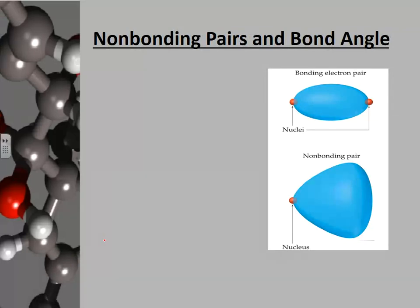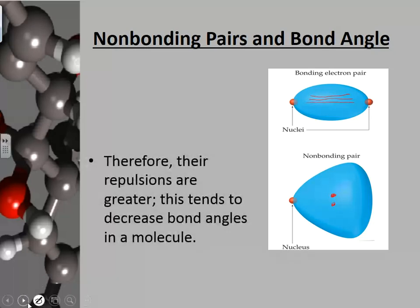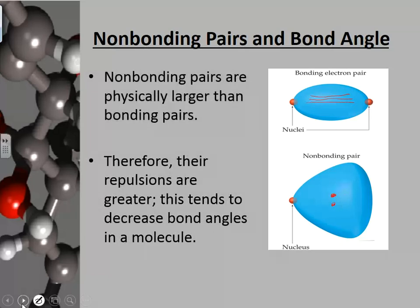Let's talk about non-bonding pairs and bond angles. If the red dot represents the nucleus of an atom and this represents the nucleus of a second atom sharing electrons between them, the bonding electron pairs are held in between — whether it's a single, double, or triple bond. Bonding electrons are held in between, so they take up less space than non-bonding electrons. Lone pairs take up more space — their electron domain is greater. Non-bonding pairs are physically larger than bonding pairs, their repulsions are greater, and they tend to decrease bond angles in your molecule.